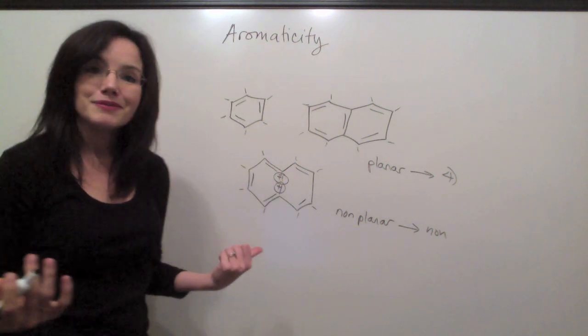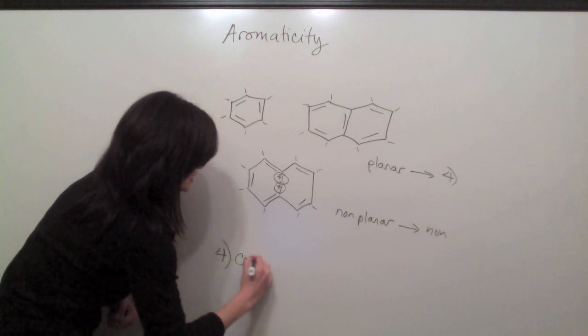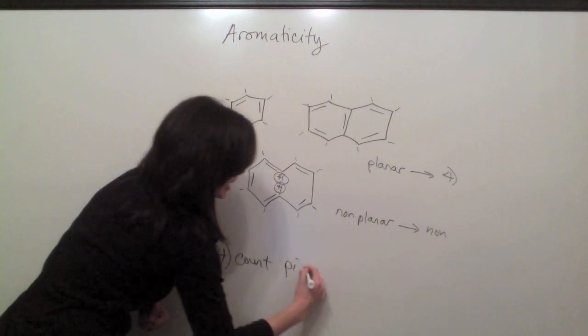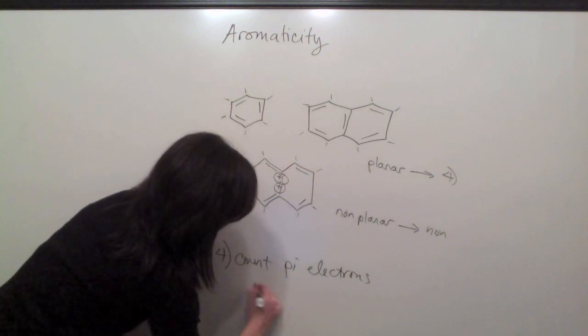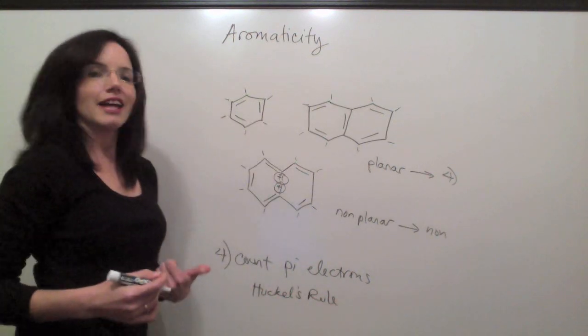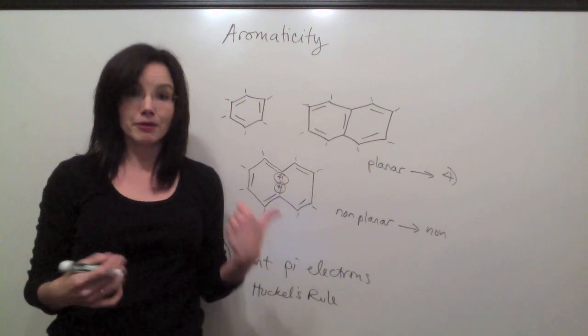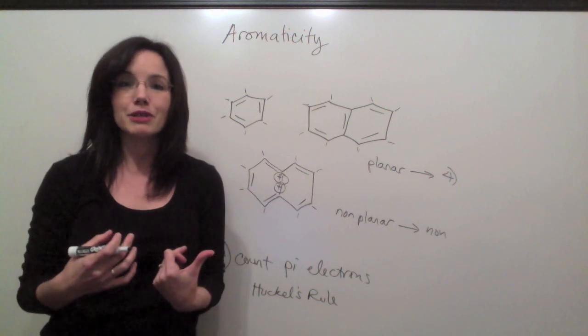So let's talk about step four. Step four is count the pi electrons. And then you're going to apply Huckel's rule. Now, counting the pi electrons, just like everything we've talked about so far, is not a complicated process, but you need someone to show you how to do it.